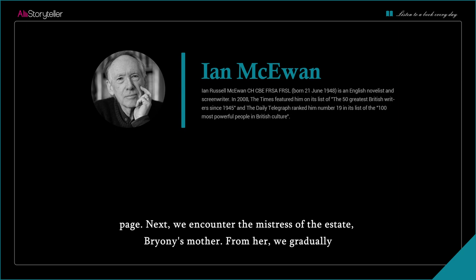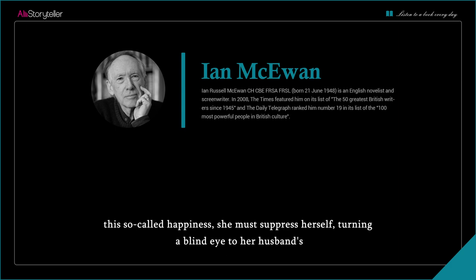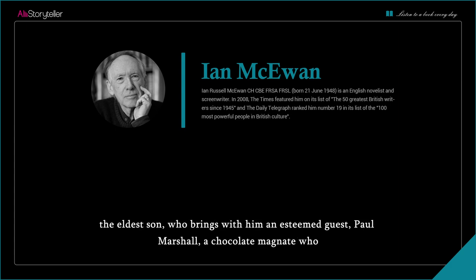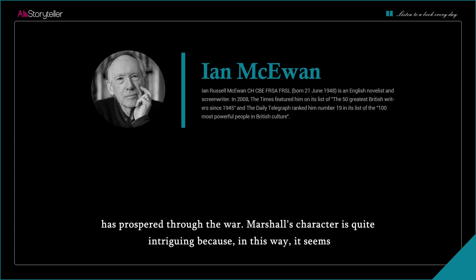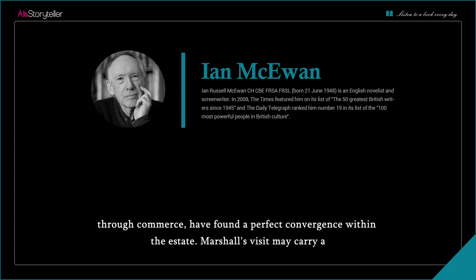Next, we encounter the mistress of the estate — Bryony's mother. From her, we gradually discover that the peace the estate supposedly possesses is merely superficial. To maintain this so-called happiness, she must suppress herself, turning a blind eye to her husband's infidelity, and enduring the drudgery of household chores and numb silence. We also see the arrival of the eldest son, who brings with him an esteemed guest, Paul Marshall, a chocolate magnate who has prospered through the war. Marshall's character is intriguing — it seems the aristocracy, living off inherited wealth, and the nouveau riche, who have gained wealth through commerce, have found a perfect convergence within the estate.